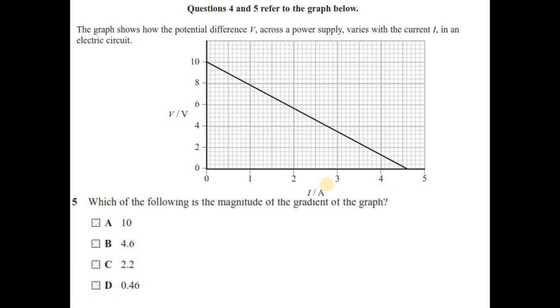Question number 5, which of the following is the magnitude of the gradient of the graph? For the gradient, you take this point and this point and find rise over run. So gradient is 10 divided by minus 4.6. Your answer will be minus 2.17. If you see in your option, negative sign is not given, so we can ignore this negative sign. In fact, this is the graph of V and I and we have a negative gradient, which shows internal resistance minus R. This minus gets cancelled, and you have answer 2.17. Rounding this off, you have 2.2. So option is C.